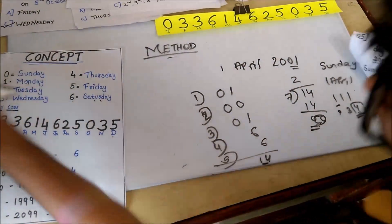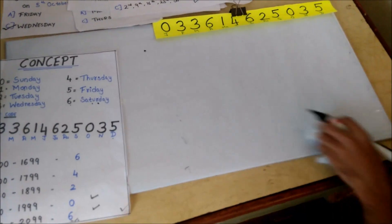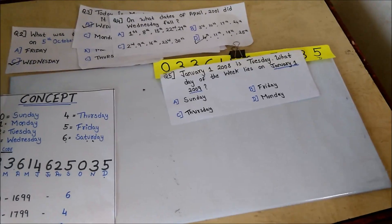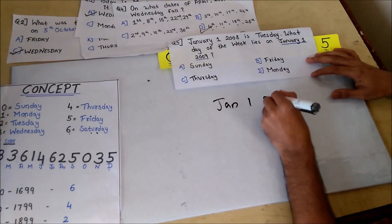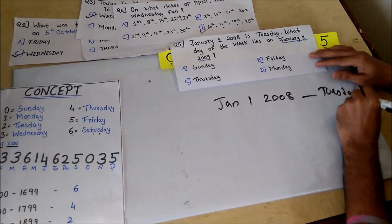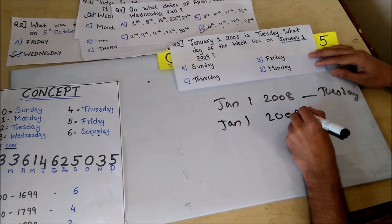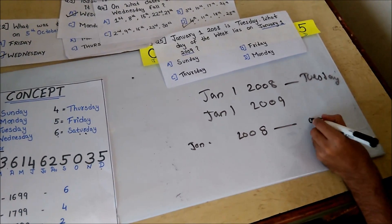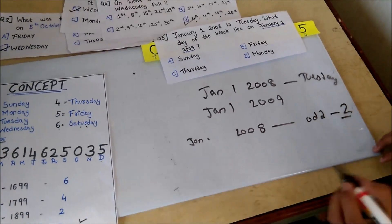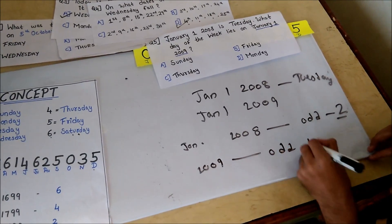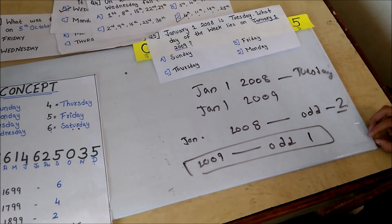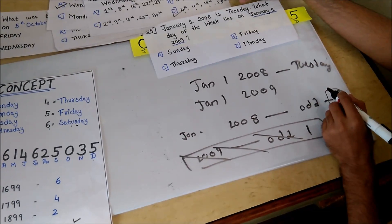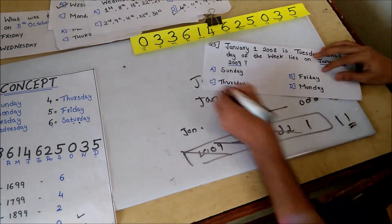Now see our last problem. In this you can use a little another method. You don't have to do the whole thing. Let's see the question. January 1, 2008 is Tuesday. What day of the week lies on January 1, 2009? I know 2008 is a leap year, so odd days will be 2. And in 2009, odd days will be 1, but we will not consider because it comes before February. We consider odd days if it comes after February, so we will discard it. So after 2 days our day will be, so today is Tuesday, after 2 days: Wednesday, Thursday. The day is Thursday and our answer is Thursday.